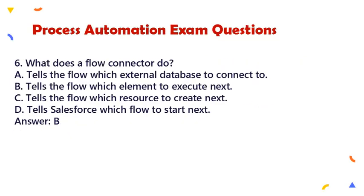Question 6: What does a Flow Connector do? a. Tells the Flow which external database to connect to, b. Tells the Flow which element to execute next, c. Tells the Flow which resource to create next, d. Tells Salesforce which flow to start next. Answer: b.